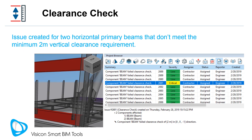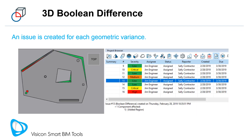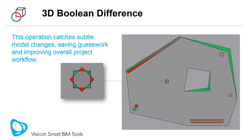We are now looking at issues created by the Clearance Check operation. The selected operation shows two beams that did not pass the 2 meter vertical clearance requirement. The 3D Boolean Difference operation is a powerful tool that gives precise feedback on geometric changes between two model versions. It is configured to check the components or model in input set A versus those in input set B. Added and removed sections between two models are color-coded and assigned to issues for tracking and resolution. This operation catches subtle model changes, saving guesswork and improving overall project workflow.